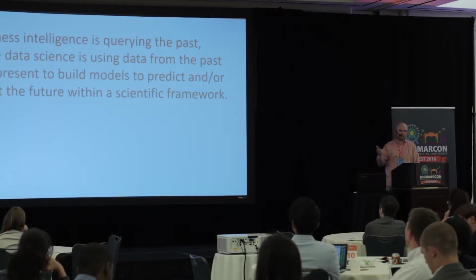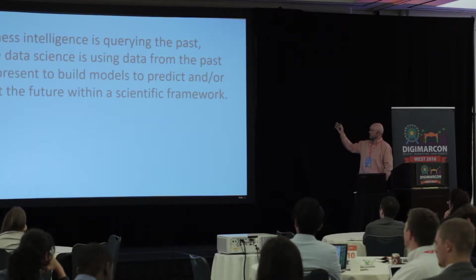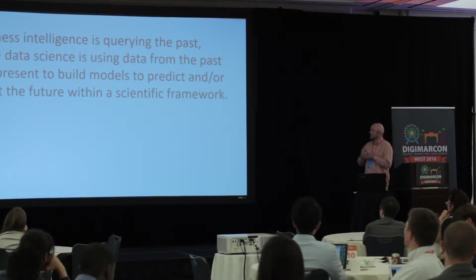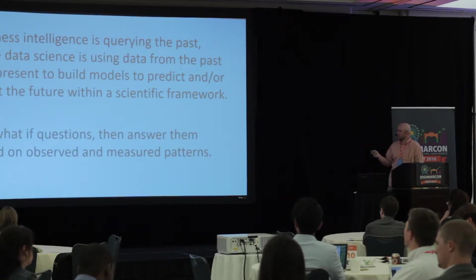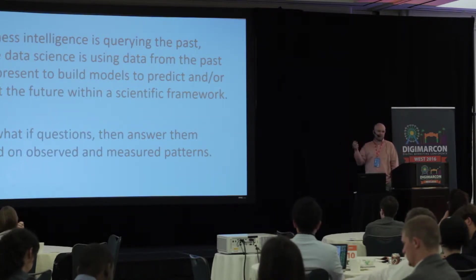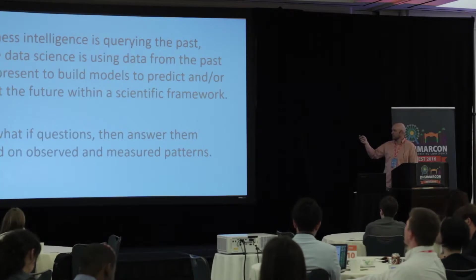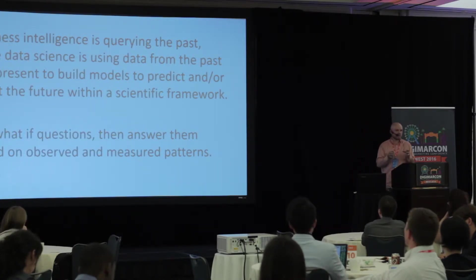So let's look at comparative definitions. Business intelligence is querying past data, while data science is using data from the past and present to build models that predict or affect the future within a scientific framework. Another definition — probably the best succinct answer I could find — is that data scientists ask what-if questions, then answer them and observe and measure patterns within data. That's really what they do: ask what-if, and then use data to try to substantiate an answer.